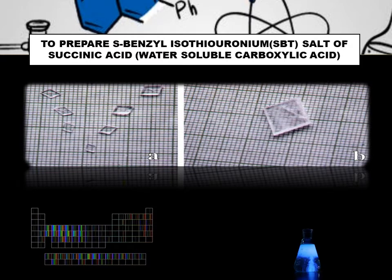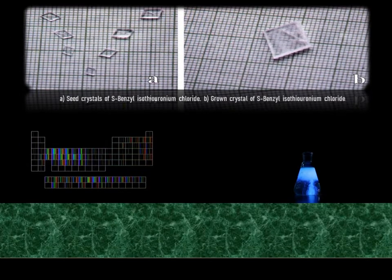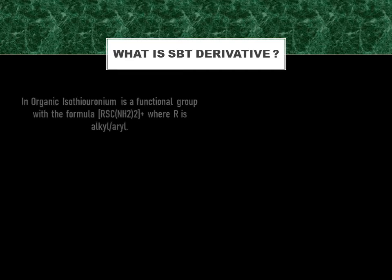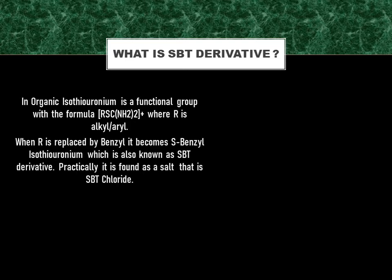These are the crystals of SBT. You all must be wondering what is this SBT derivative. Well, in organic chemistry, there is a functional group named isothiouronium with the formula RSC(NH2)2 positive, as you can see on the screen, where R can be alkyl or aryl. When this R is replaced by benzyl, it becomes S-benzyl isothiouronium derivative, also known as SBT derivative. It is quite unstable in its free state, that is why it is found as a stabilized salt.